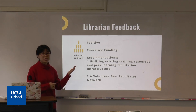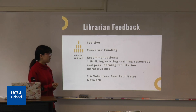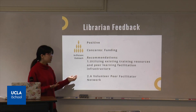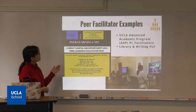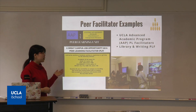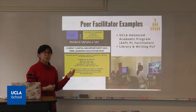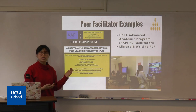In terms of in-person help, feedback from librarians on campus is very positive, but they are also concerned about the funding issue. My recommendation would be: first, utilize existing training resources and peer-learning facilitation infrastructure. Second, because infrastructure might still cost a lot, it's worth thinking about creating a volunteer peer facilitator network. Here are some peer facilitation model examples. One is from UCLA — the AAP, an academic program that provides academic support to minority students on campus. If we can have collaboration between such programs and international student services, such as the Dashew Center at UCLA, it's easier to create peer-facilitated models serving Chinese international students.